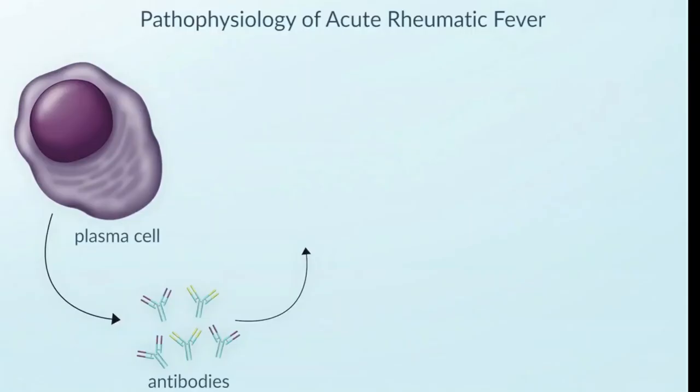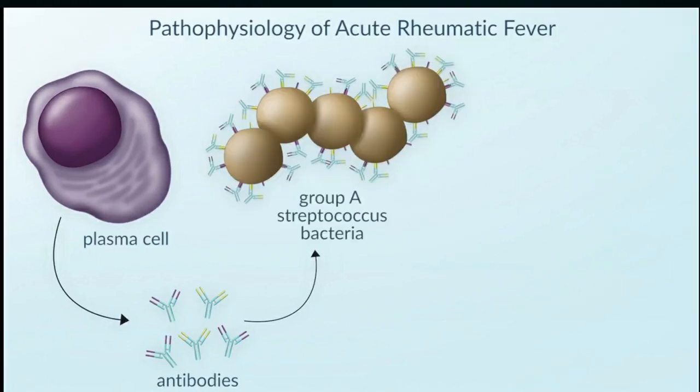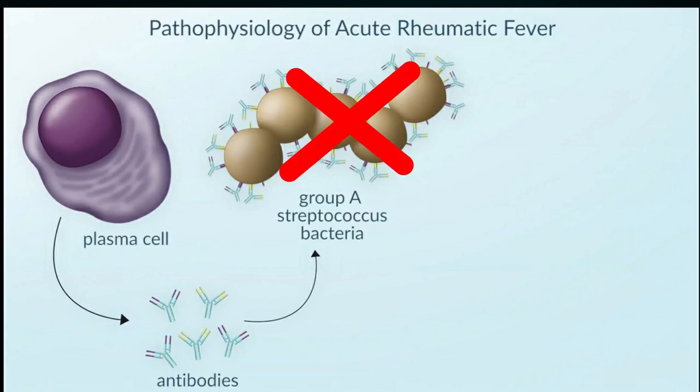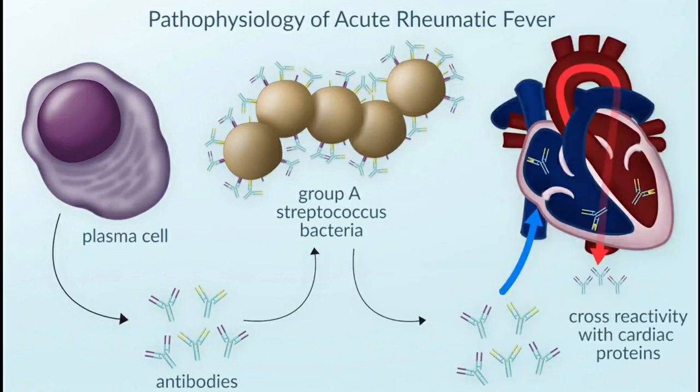When M-protein enters the body, it triggers the release of antibodies (plasma cells). Normally these antibodies would destroy the antigen. But in rheumatic fever, these antibodies undergo a cross-reaction with similar proteins found in the brain, heart, skin, and other tissues. This is called molecular mimicry — the key mechanism of the cross-reaction.